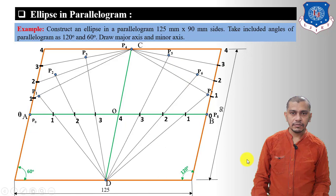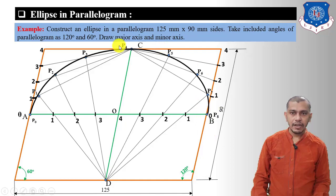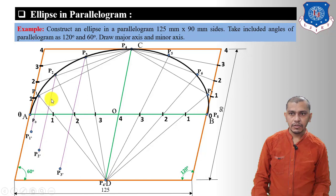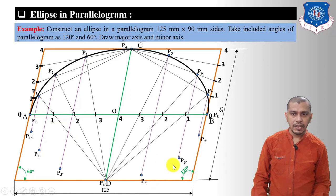Apply the same method in the other quadrant: divide the lines into four equal parts, connect the points to C and D, and mark the intersection points P5, P6, P7, P8. Draw the freehand curve passing through these points to get a half ellipse. To draw the other half without repeating the full method, draw lines parallel to CD from P1, P2, P3, measure those lengths, and mark the same lengths on the other side to get P1', P2', P3'. Apply the same for P5', P6', P7', and connect these points to complete the ellipse.